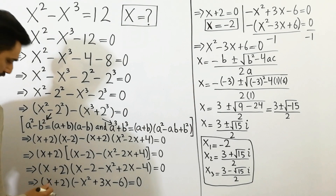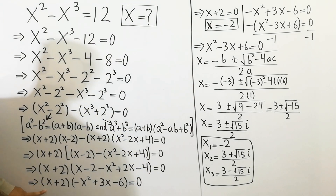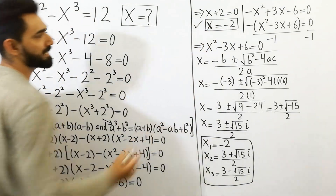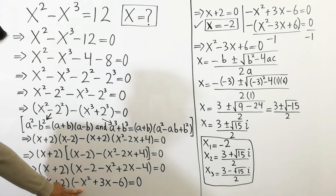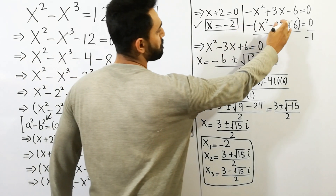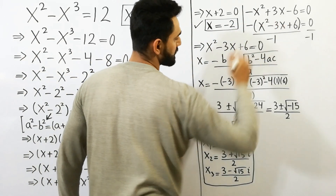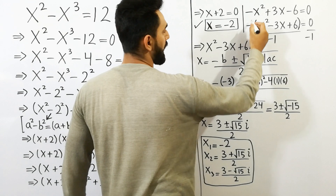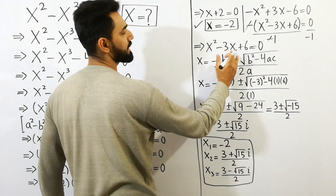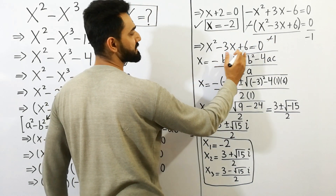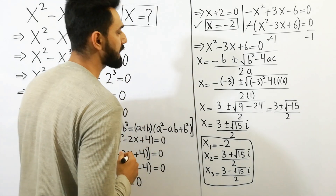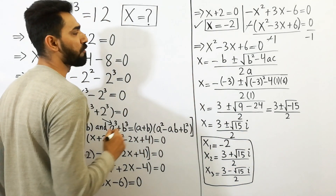Next step: x plus 2 is equal to 0, so x is equal to minus 2. And at x minus x squared plus 3x minus 6 is equal to 0. By dividing by minus, we get x squared minus 3x plus 6 is equal to 0.